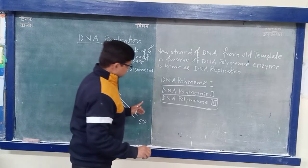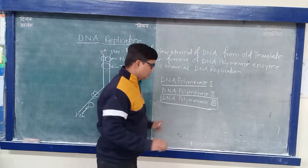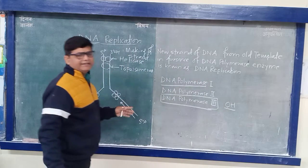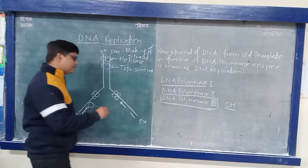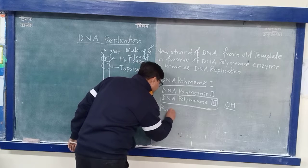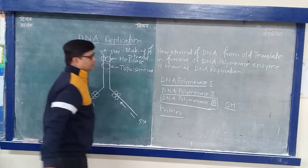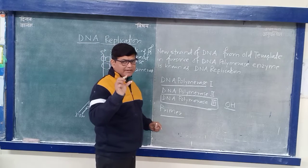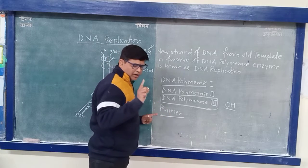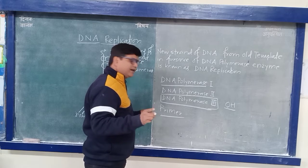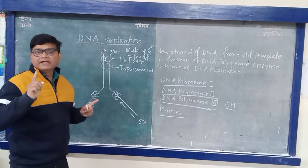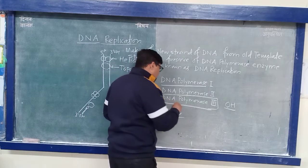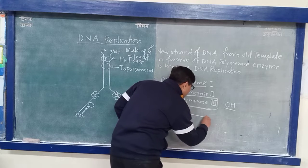But that DNA Polymerase requires a 3' hydroxy group. So for getting the hydroxy group, there is a requirement of a Primer. In the case of living organisms, Primer is a small segment of RNA. But in lab conditions they use DNA as primer. In living organisms, Primer is a small segment of RNA.